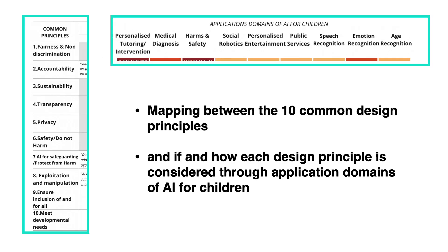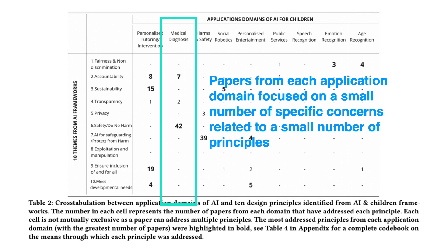Specifically, we looked at if and how each design principle is considered through application domains of AI for children. In general, we found that papers from each application domain focused on a small number of specific concerns related to a small number of principles most relevant in each domain. Take medical diagnosis systems developed for children, for example: only a small number of design principles were addressed, very locally, on some specific concerns.